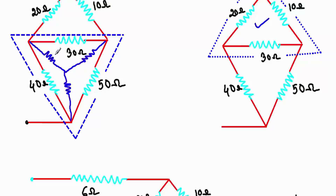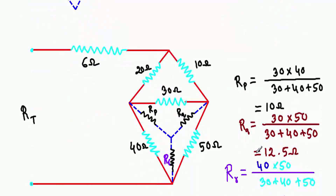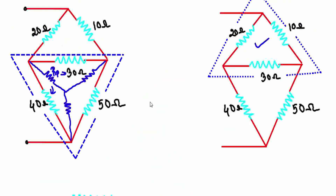Now let's calculate RP. I will multiply the two adjacent resistors, 30 and 40, and divide their product by the sum of the three resistances of this Delta circuit: 30 plus 50 plus 40. So RP = (30 × 40) / (30 + 50 + 40) = 10 ohm.